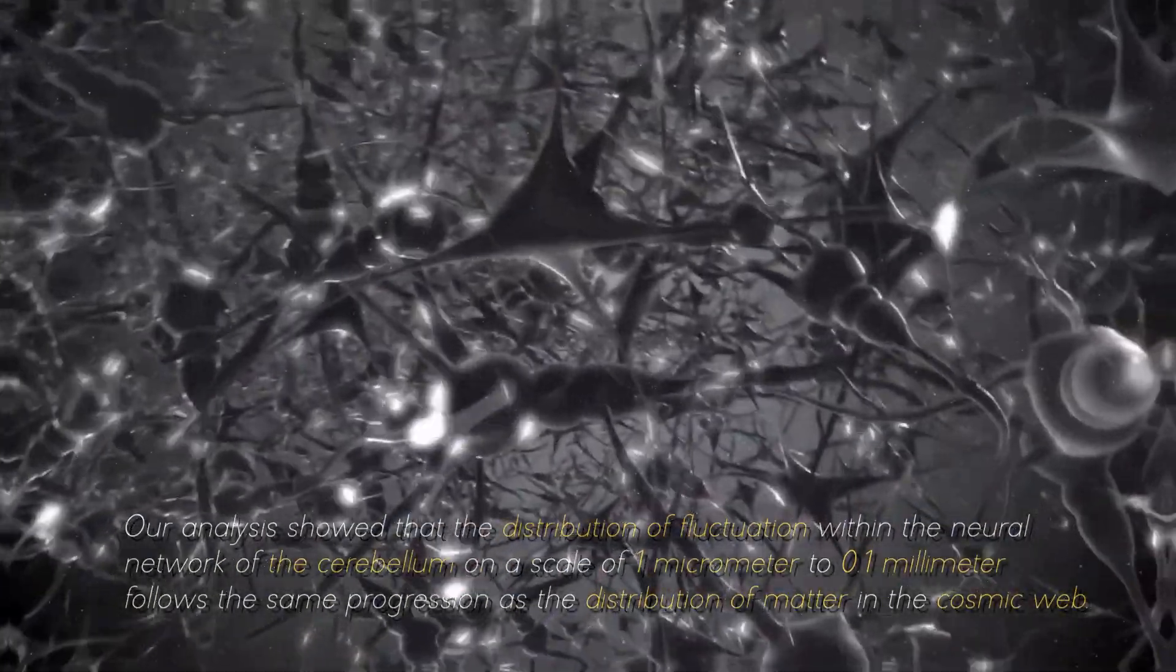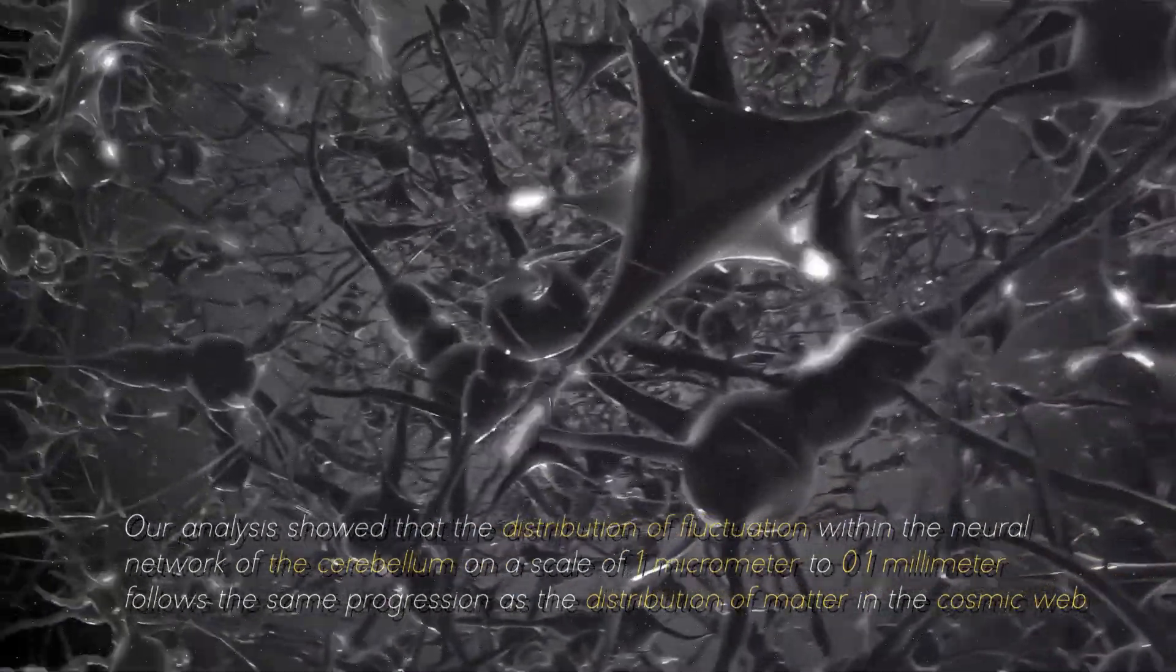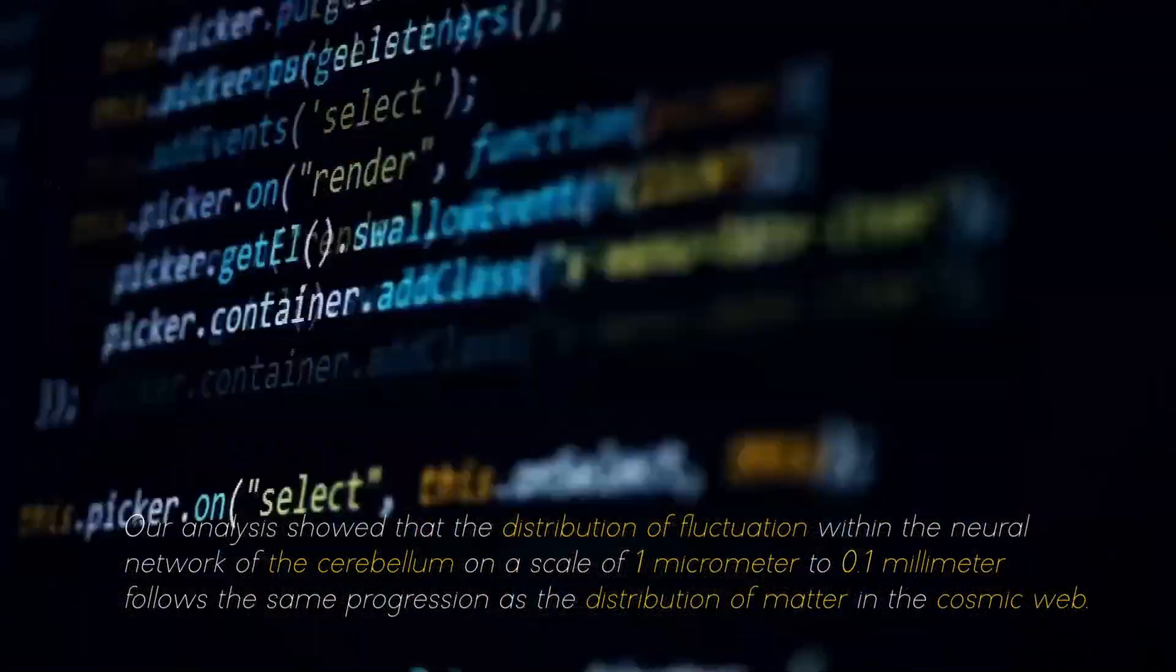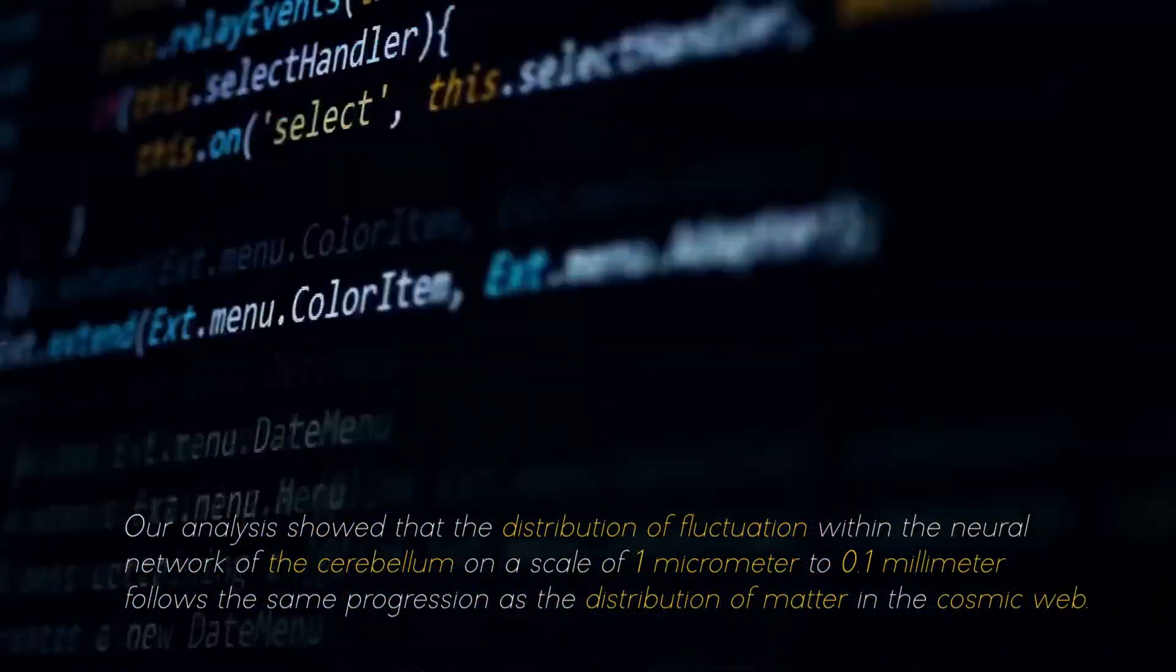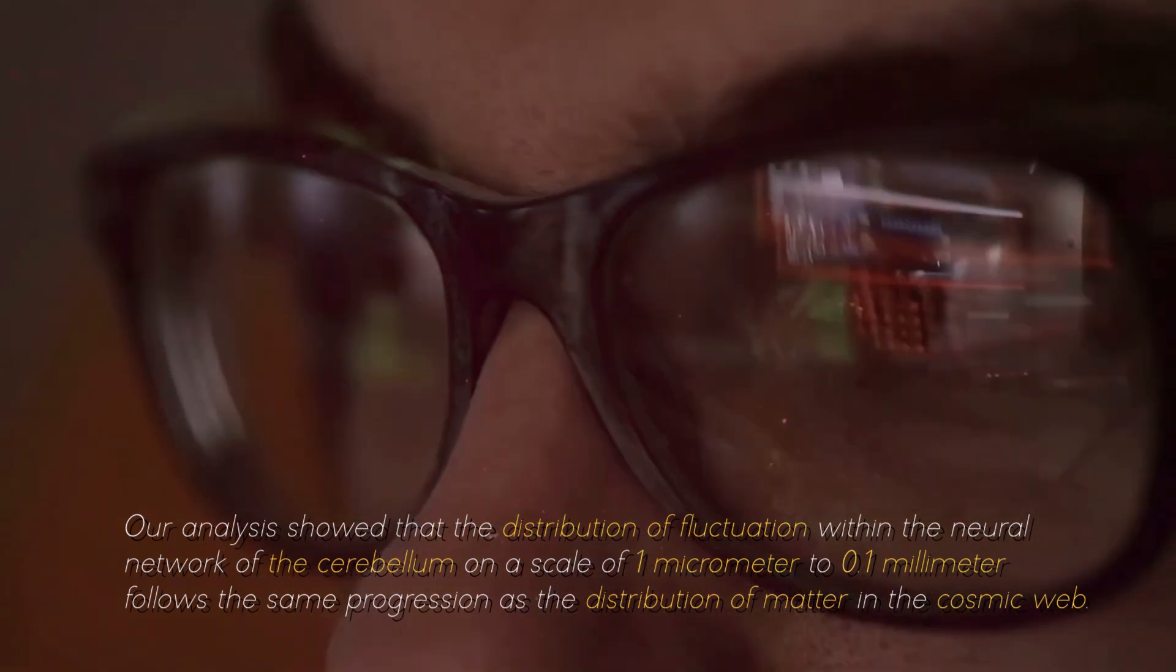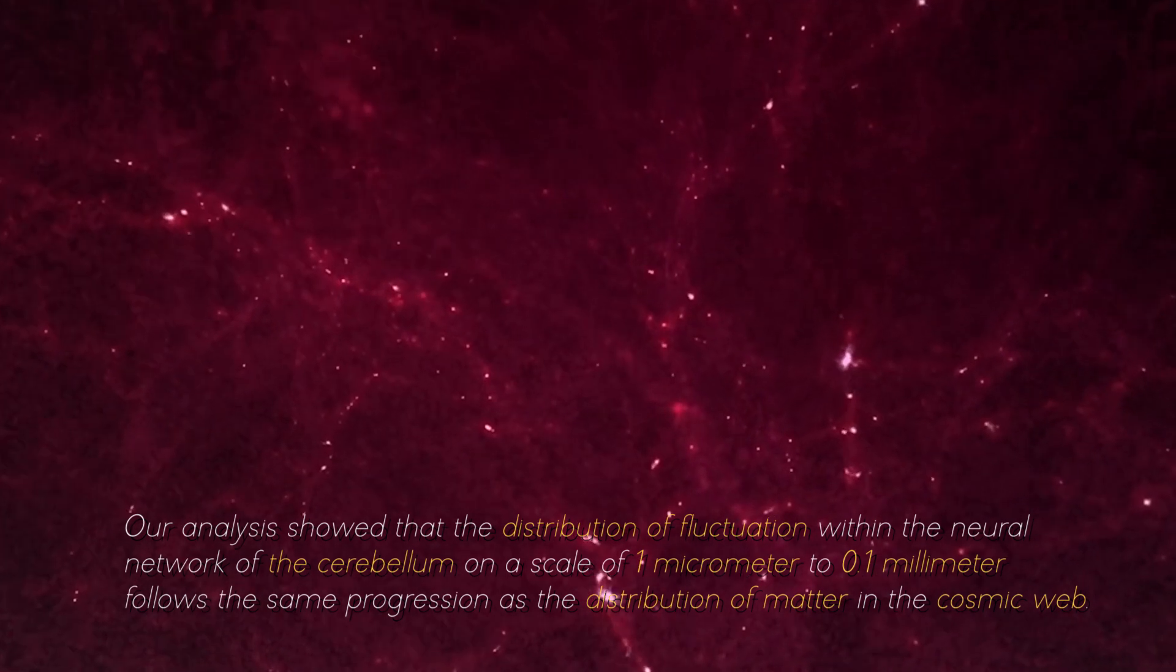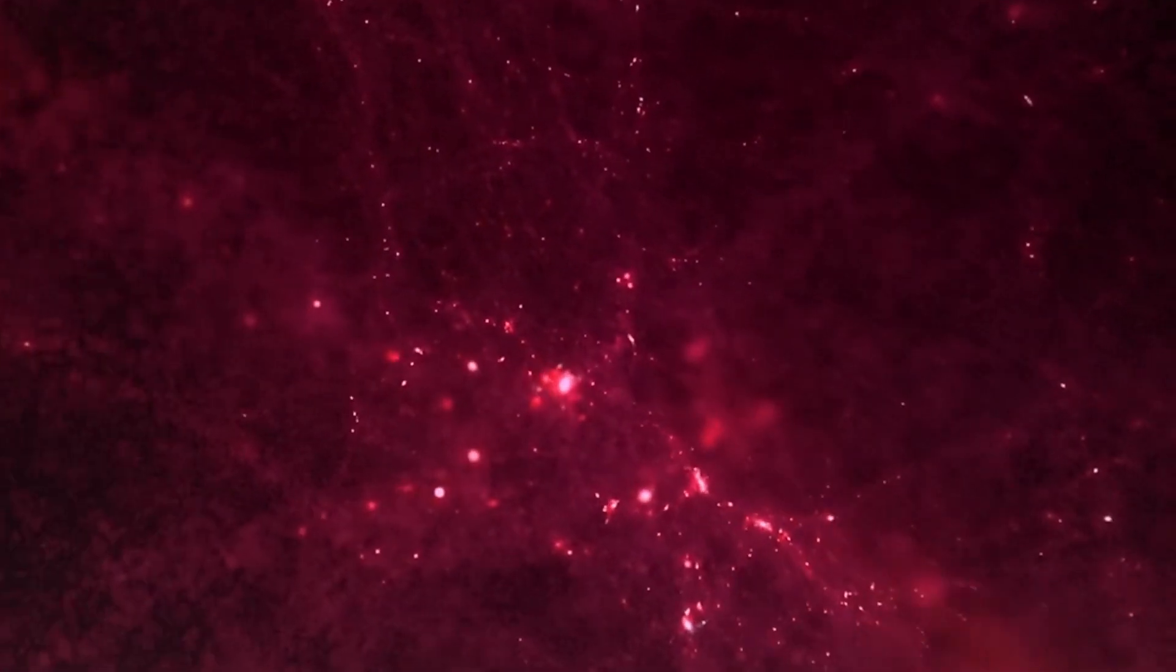Our analysis showed that the distribution of fluctuation within the neutral network of the cerebellum on a scale of 1 micrometer to 0.1 millimeters follows the same progression as the distribution of matter in the cosmic web, commented one of the researchers in charge of this project.